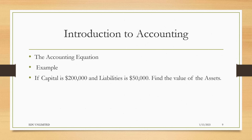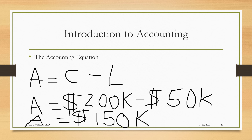Here's an example. If capital is $200,000 and liabilities is $50,000, find the value of the assets. Using the formula, assets equal capital minus liabilities — so assets equal $200,000 minus $50,000. Assets is equal to $150,000. Sometimes the examiner not only wants the answer but also wants you to calculate or show your workings.